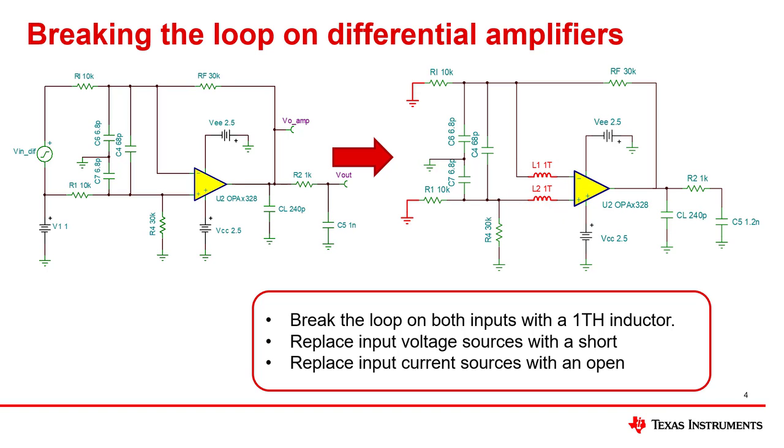The next step is to eliminate the input signal sources. This is done by shorting voltage sources and opening current sources. This example only contains voltage sources, so they are both shorted out. The modified input connections are shown in red in the circuit on the right.